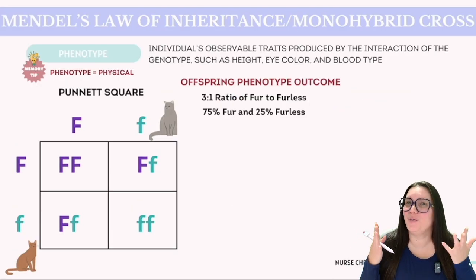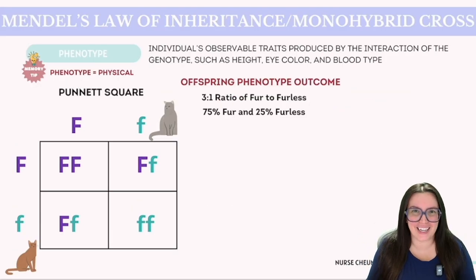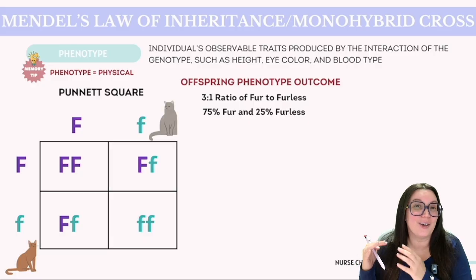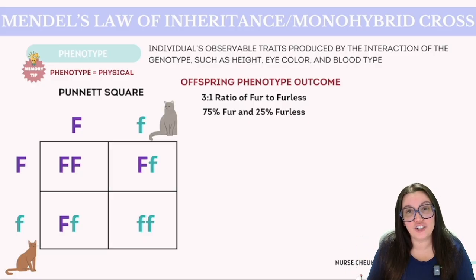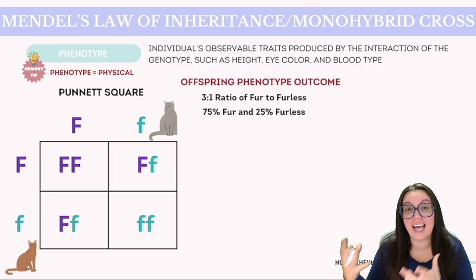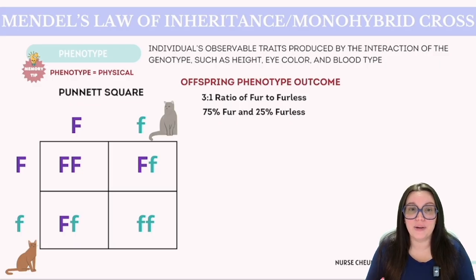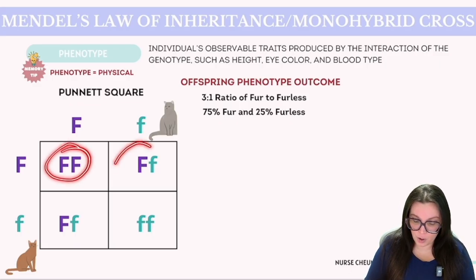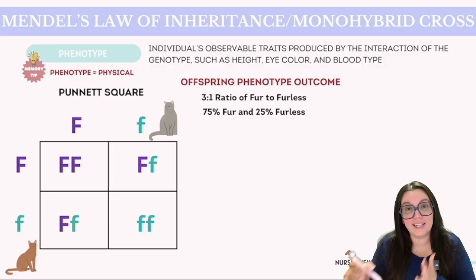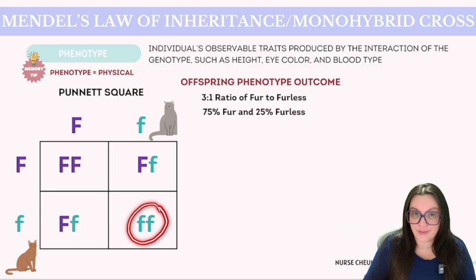Now we're going to shift our focus to phenotype. The term phenotype can be remembered by associating pheno with physical appearance — that's how I like to remember that this is an observable characteristic of an organism. In this scenario, the trait in question is the presence or absence of fur. Given that the presence of at least one dominant allele — capital F — results in fur, offspring with genotypes capital F capital F or capital F lowercase f are going to indeed have fur. Thus, three of our offspring are going to display that furry phenotype.